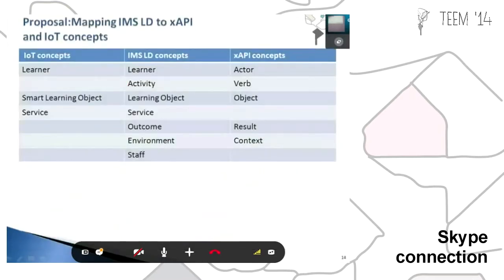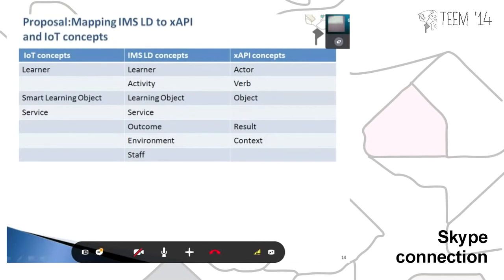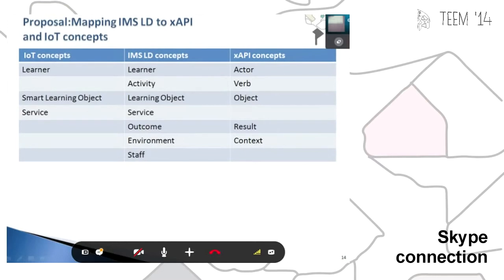For merging all those standards, we need to make some mapping between IMS LD and xAPI, and also the Internet of Things concepts. We find that three of these standards share common concepts. For example, in the Internet of Things concepts we find the learner. In IMS LD we can also design the learner, and in the xAPI context we have the actor, which is a key learner concept.